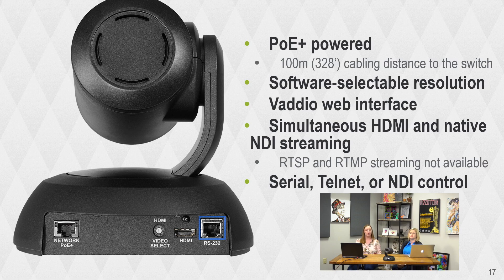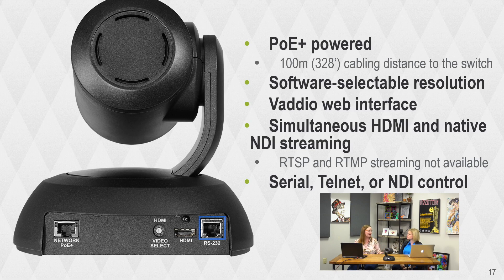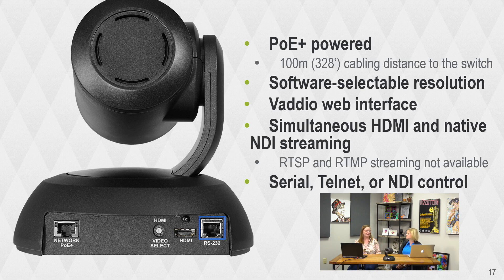There's something really cool we've added recently to RoboShot Elite cameras. You can set the rotary on the back of the camera to be your camera's output resolution, and we now have position zero where you can change that resolution in the camera's web interface. So if the camera is up in the ceiling and you want to change resolution on the fly, you don't have to get up there and move that rotary — just get into the web interface and pick a different resolution. The Vaddio web interface lets you control the camera from any browser anywhere on the network.